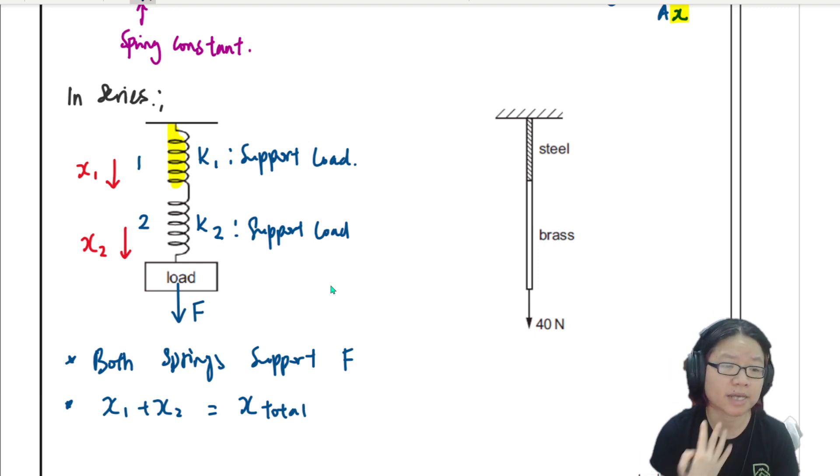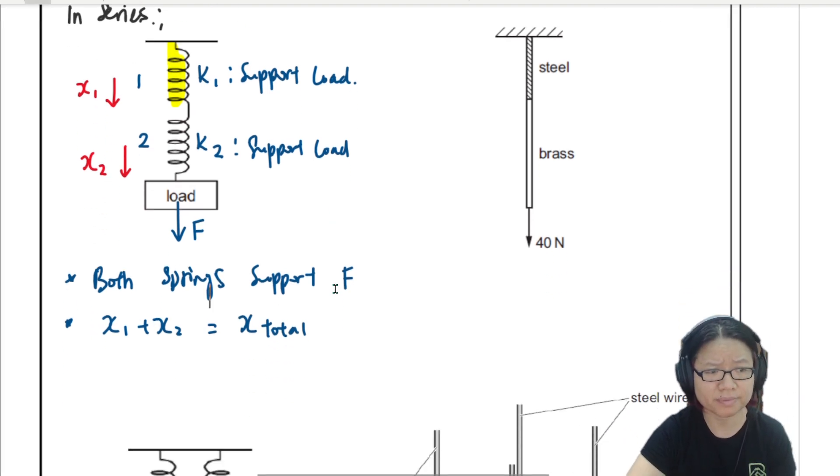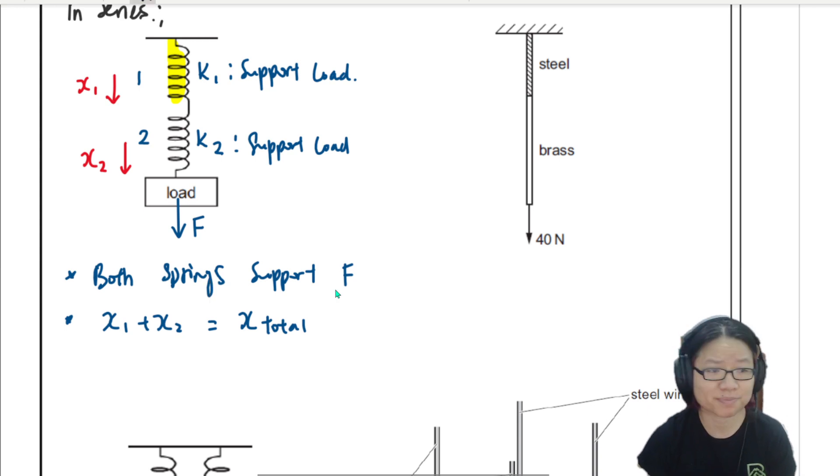Of course, sometimes they can ask you to find the total spring constant. But if this is already good enough for you to operate, because from here, I know F = kx, right? So I can write this as F1/k1 + F2/k2 = F, the total F, which is F1 and F2. So they all have the same force.